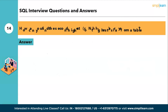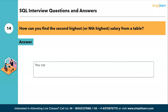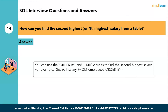The fourteenth question: how can you find the second highest or nth highest salary from a table? You can use ORDER BY and LIMIT clauses to find the second highest salary. For example: SELECT salary FROM employees ORDER BY salary DESC LIMIT 1 OFFSET 1. If you want the nth highest salary, provide OFFSET n. For example, for the fifth highest salary, use OFFSET 5.